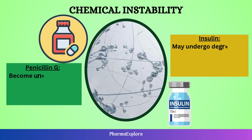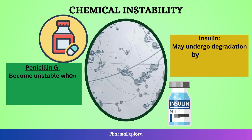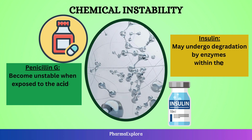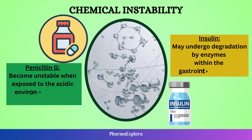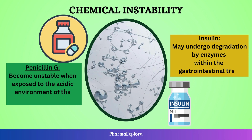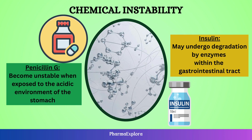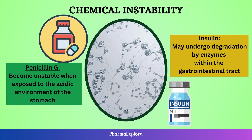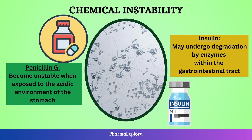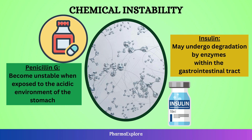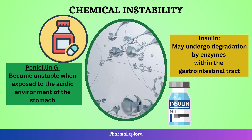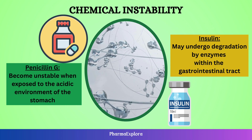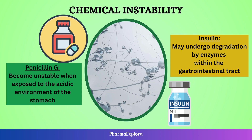Third: chemical instability. Certain drugs, like penicillin G, can become unstable when exposed to the acidic environment of the stomach. In contrast, substances like insulin may undergo degradation by enzymes within the gastrointestinal tract.